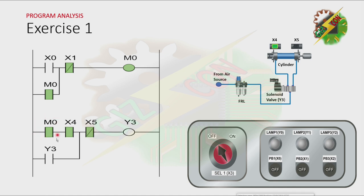And because M0 is on, and the cylinder is at fully retracted position again, the cylinder will extend again. And the cycle will repeat. The only way to make this cycle stop is by turning off M0. We need to energize X1, or press PB2.